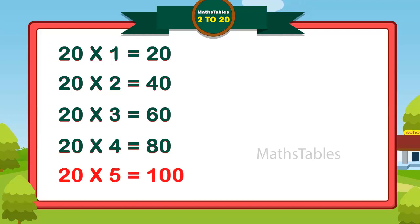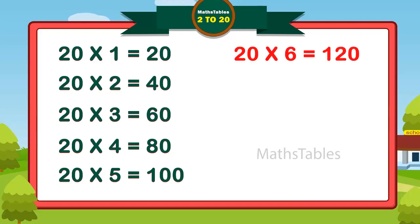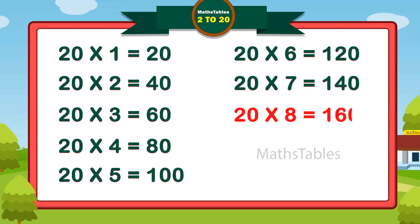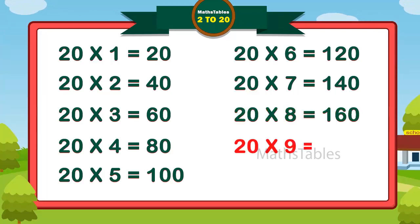20×5 is 100, 20×6 is 120, 20×7 is 140, 20×8 is 160, 20×9 is 180, 20×10 is 200.